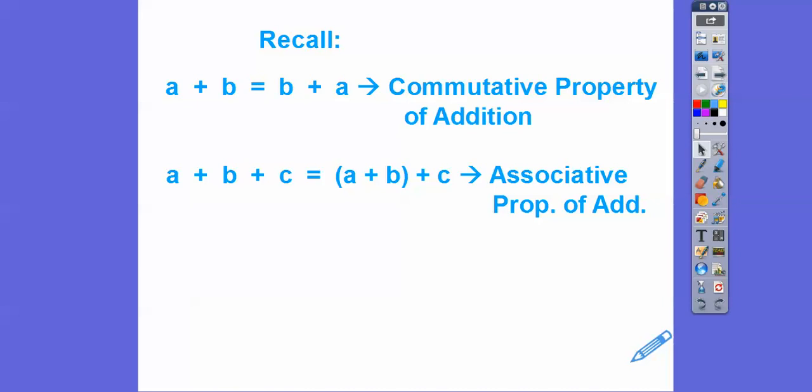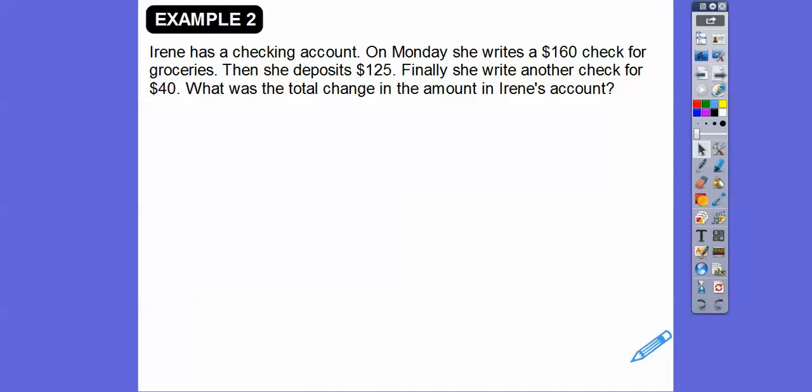Remember, commutative property, they're going to ask us to do that in the next problem. A and B can commute around the addition sign and make it B and A. So A plus B equals B plus A. Like when I drive to work, I commute to work, these numbers will be commuting around the addition sign. That's called the commutative property of addition. And then the associative property says I can associate any pair of these first to add. If we have A plus B plus C, I can add A plus B first, or I can add B plus C first if I wanted to.